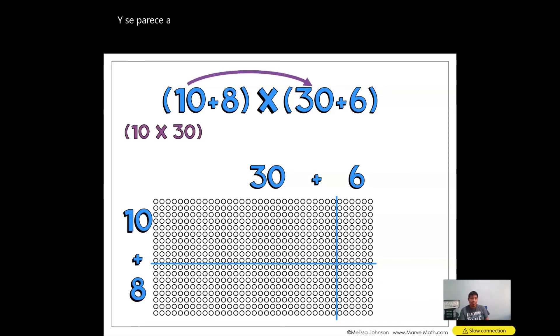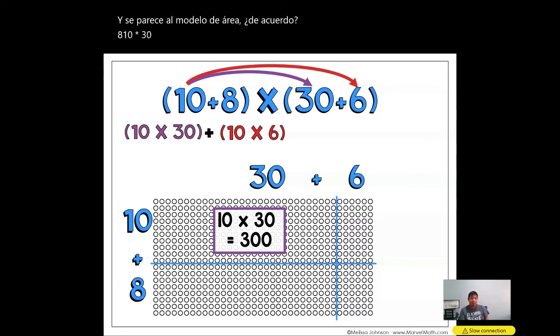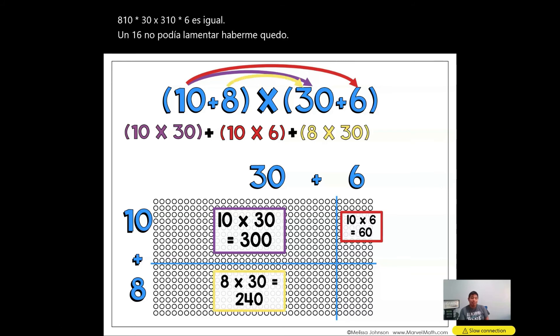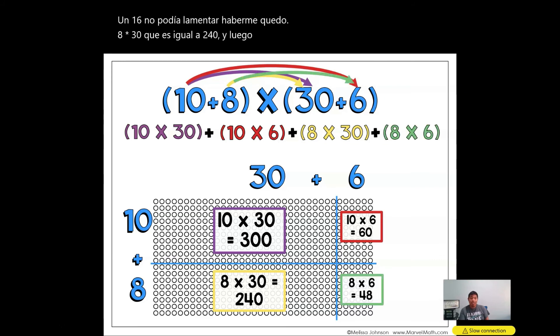10 times 30 equals 300. 10 times 6 equals 60. Sorry, I blanked out. 8 times 30, which equals 240. And then 8 times 6, which equals 48.